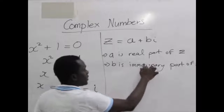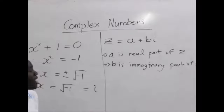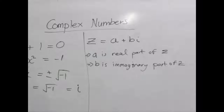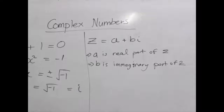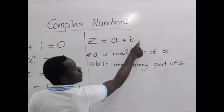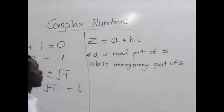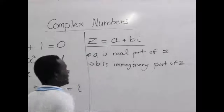This means that every complex number has a real part, which exists in our real number system, and a complex part which we can only imagine, which we call the imaginary part. That's how we denote a complex number z.